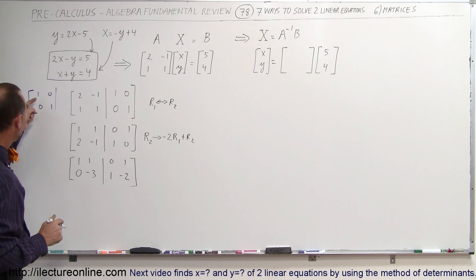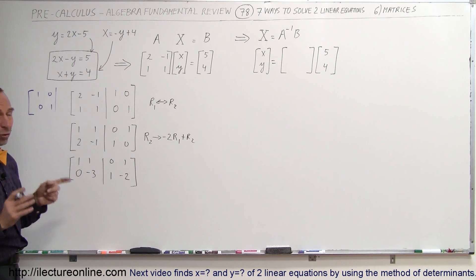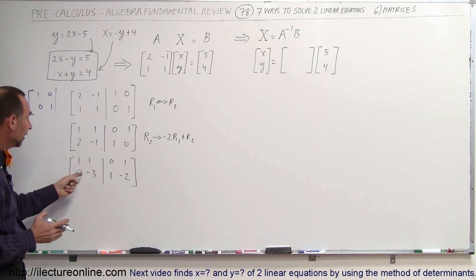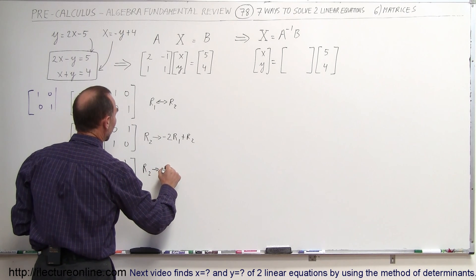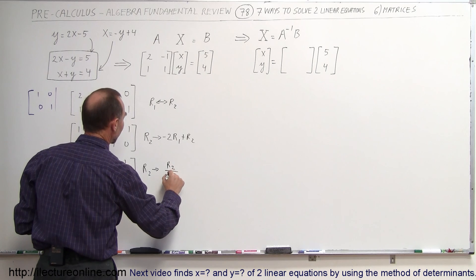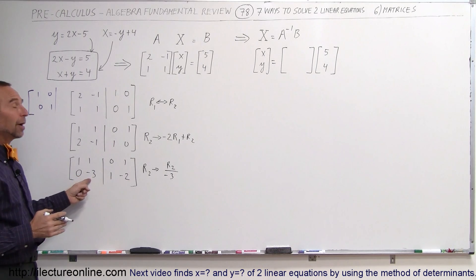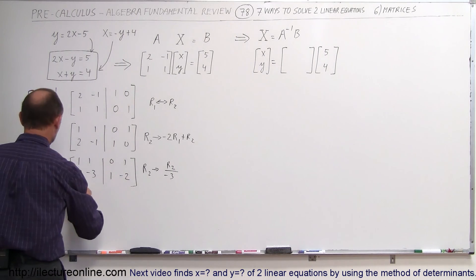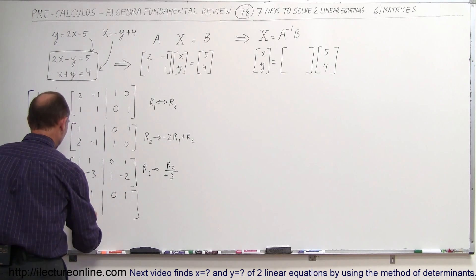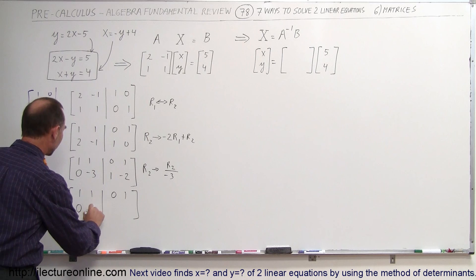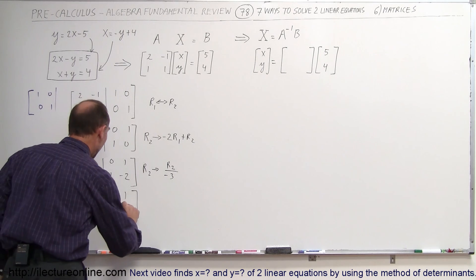Now we're halfway there — we have a 1 and a 0 in the left column. Next, we turn the negative 3 into a 1 by dividing the entire second row by negative 3. The first row stays at 1, 1, 0, 1. The second row becomes: 0, positive 1, negative one-third, and positive two-thirds.